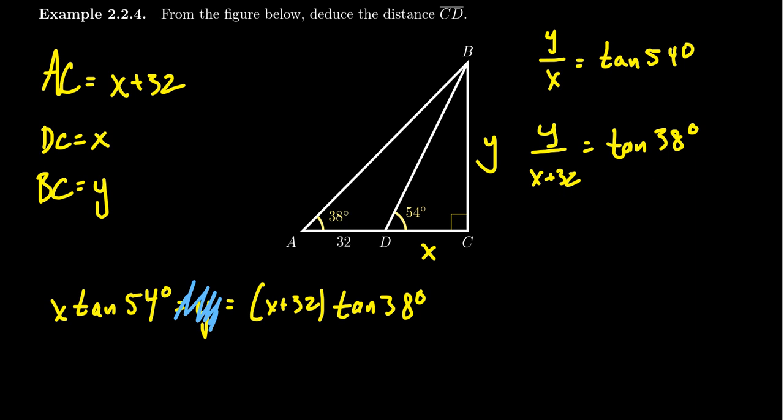So to proceed forward, we're going to distribute the tangent of 38 degrees. We're going to postpone the approximation of tangents at this moment. We'll wait until later on to avoid rounding errors. We're going to get X times tangent of 54 degrees. Always remember to write the degree symbol here. You're going to get X times tangent of 38 degrees, and then we're going to get plus 32 tangent of 38 degrees.